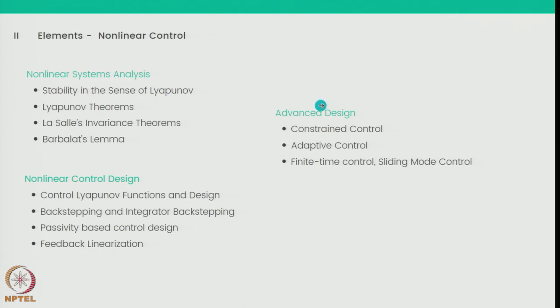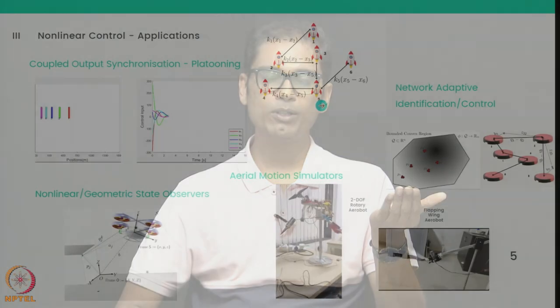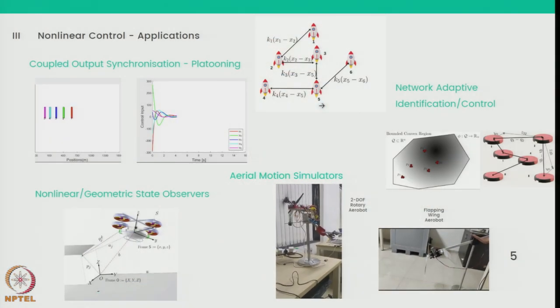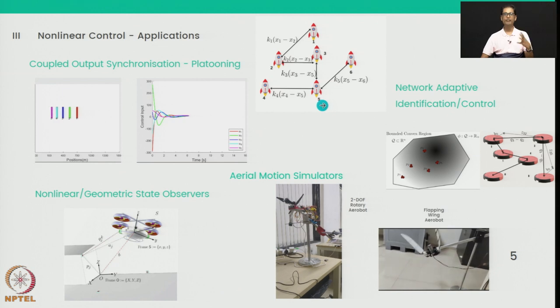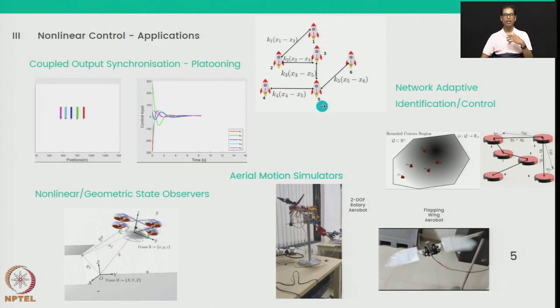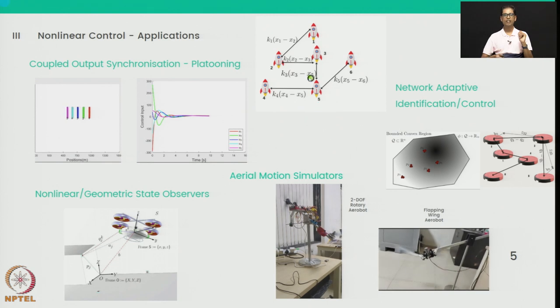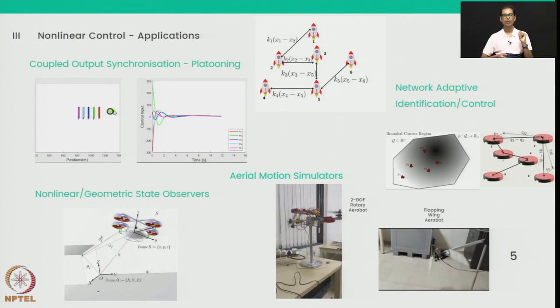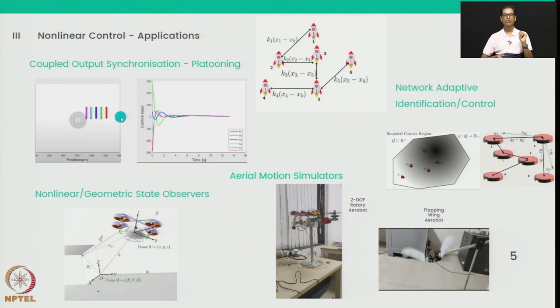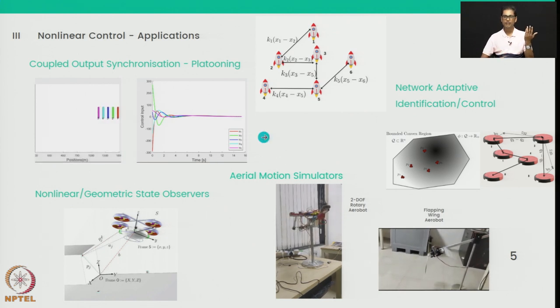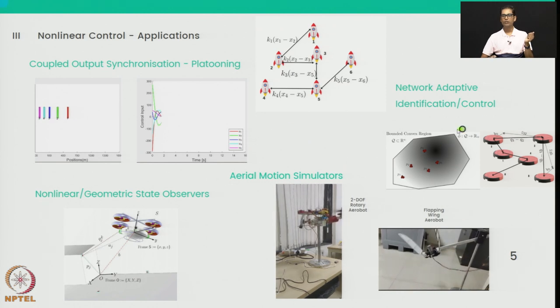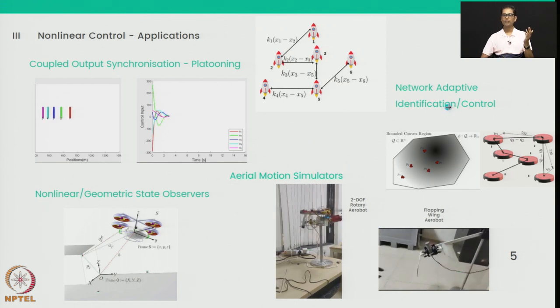What kind of applications are there for nonlinear control? These are some of the applications we work on in our own laboratory. The first is synchronization of coupled outputs, applied to vehicle platooning, which is a very important application in transportation systems. There is also network adaptive identification and control — if you have uncertainties in the network, such as biases affecting sensor measurements, how do you identify these biases over a network?